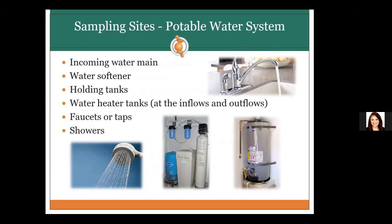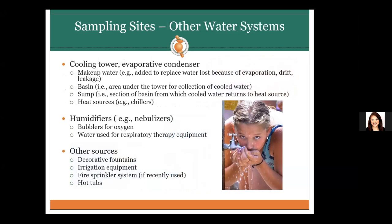For sampling potable water systems, focus on the incoming water mains, water softeners or holding tanks, water heating tanks, faucets and taps, and showers. For other systems such as cooling towers, check for recently added makeup water, water basins, water sumps, and other heat sources. You can also check humidifiers inside rooms, bubblers for oxygen, or water used for respiratory therapy equipment. Other water sources include decorative fountains, water fountains, irrigation, fire sprinklers, hot tubs, and swimming pools.